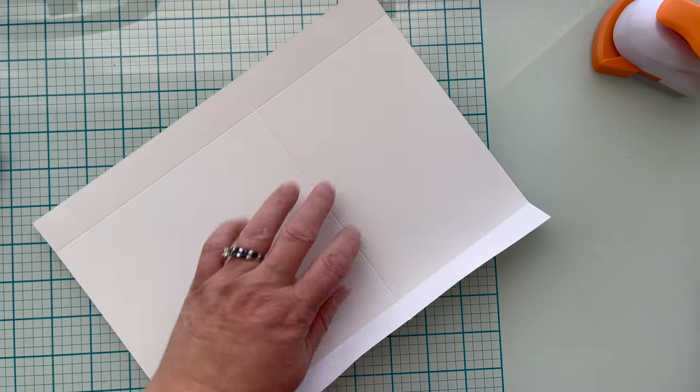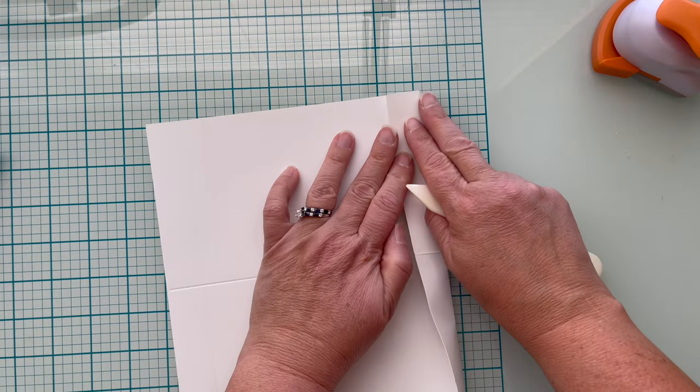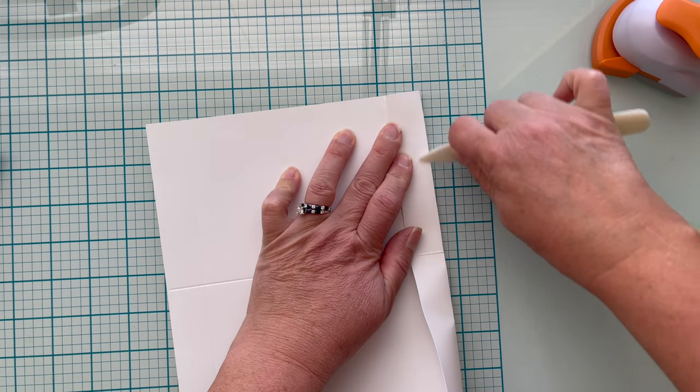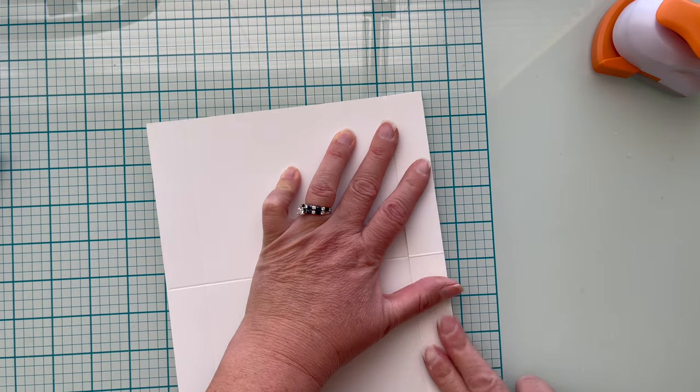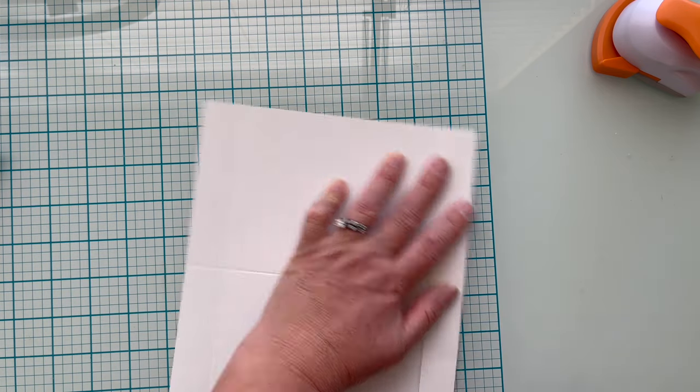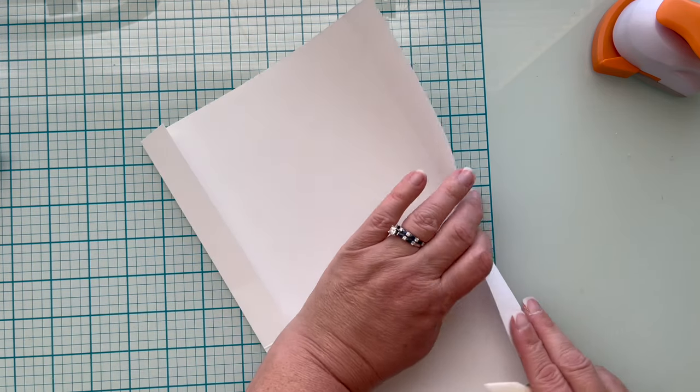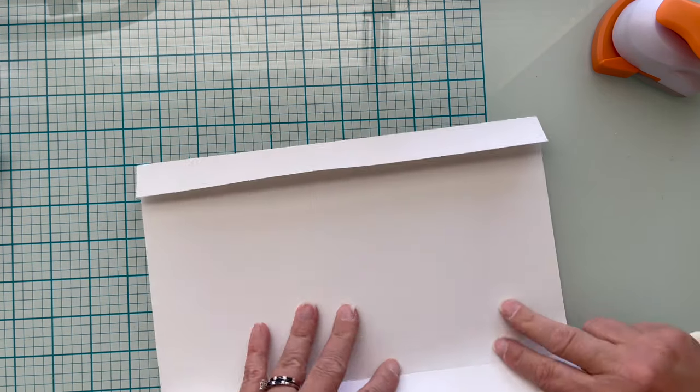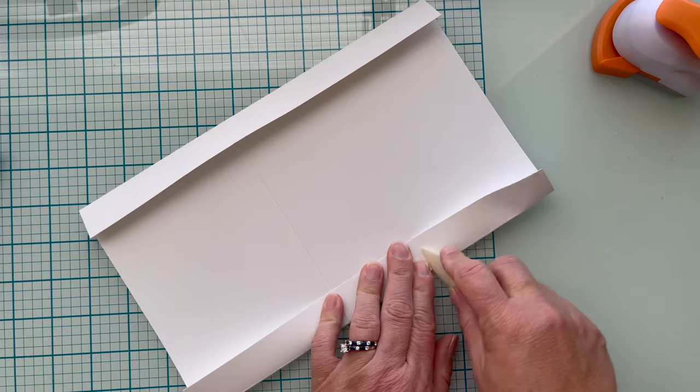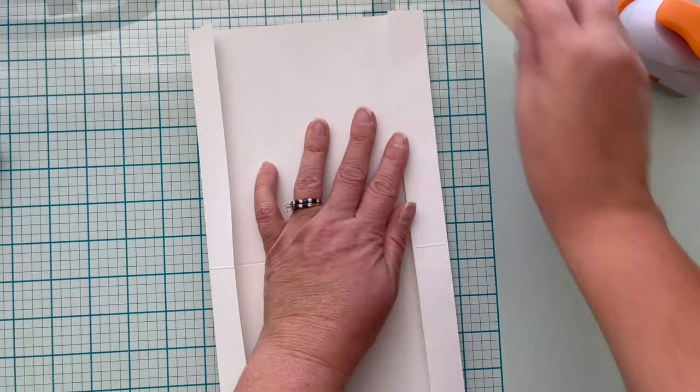With all of the scoring complete, I'm going to use a bone folder, but if you don't have one you could use a palette knife or even a butter knife to get good creases. We want to crease and burnish all of the scores that we completed.